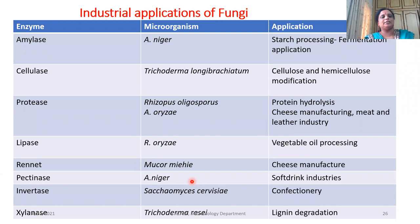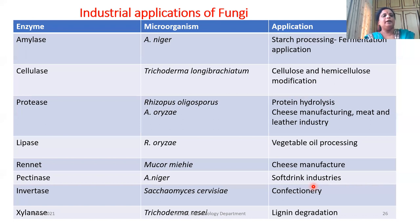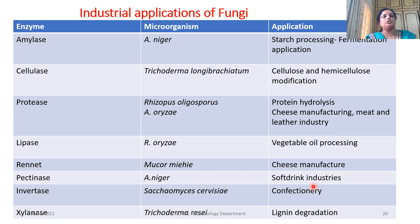Pectinase is an enzyme which has an ability of breaking down pectin into simpler form, especially used in soft drink industries, since fruits have a higher pectin component. For the breakdown of pectin, Aspergillus niger is used. Certain Fusarium species also have the ability of producing pectinase, but the problem is Fusarium produces mycotoxins. So industrially, Aspergillus niger application is more. We also have invertase, xylanase, and many other enzymes which fungi have the ability of producing. Lots of research should happen in this field.